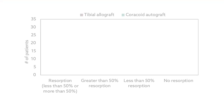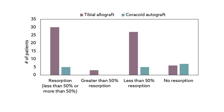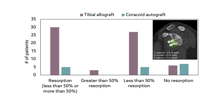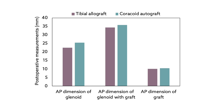The other main difference between the two graft types was related to bone resorption. The tibial allografts showed significantly higher rates of resorption than the coracoid autografts. Despite the higher resorption in the allograft patients, the final graft size for both groups was equal. It's possible the allografts showed greater resorption because the initial graft size was larger than that of the autografts.